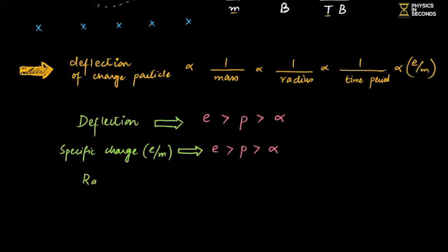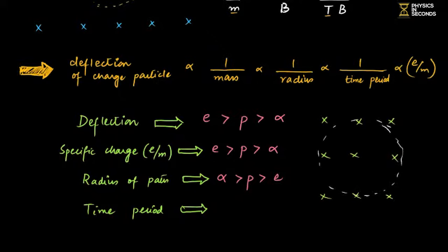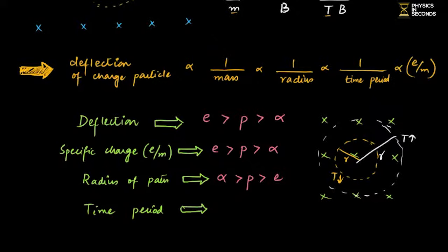For the radius in a magnetic field, the descending order is the inverse: alpha > proton > electron, because deflection and radius are inversely related. Similarly, the time period order follows the radius order: alpha has the largest time period, then proton, then electron. These descending orders must be remembered.